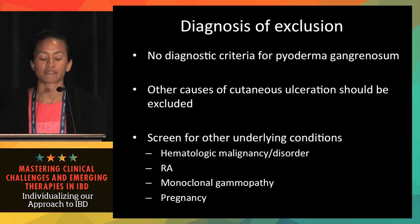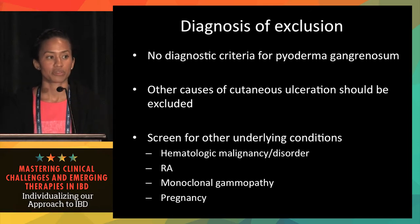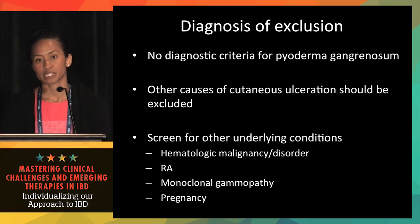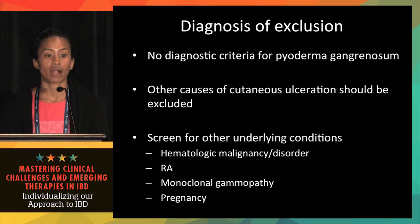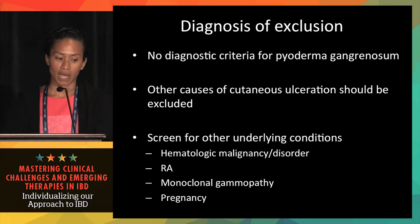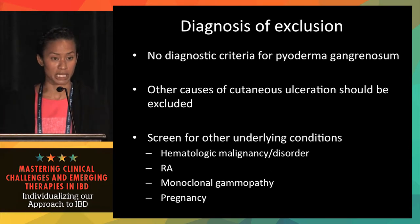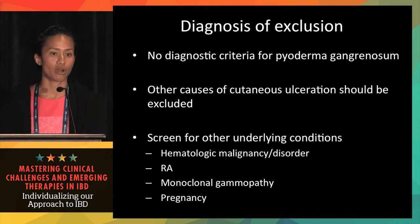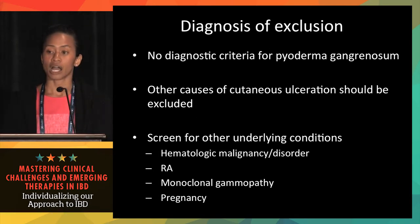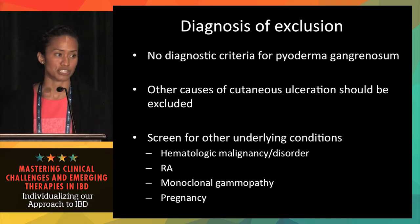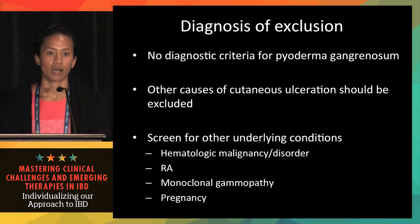PG is a diagnosis of exclusion — there are no diagnostic criteria. The most important thing is to rule out other causes of cutaneous ulceration. A biopsy is essential: we look for infection, send for tissue cultures, and look for vasculitis or vasculopathy, in addition to blood work. We screen for other underlying conditions, and even in patients with known IBD, I wouldn't overlook the possibility that they've developed something else — a hematologic malignancy, monoclonal gammopathy, or even pregnancy.